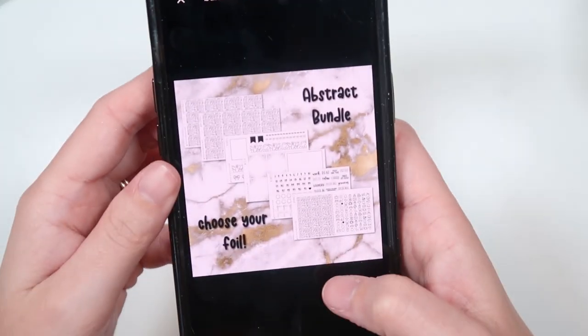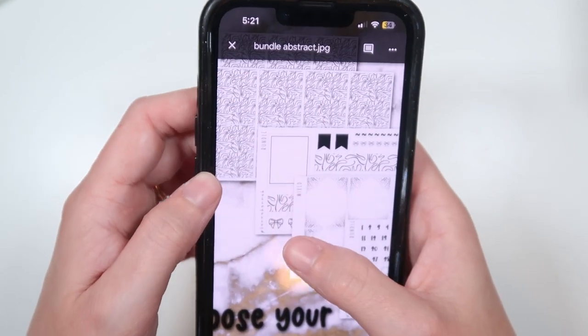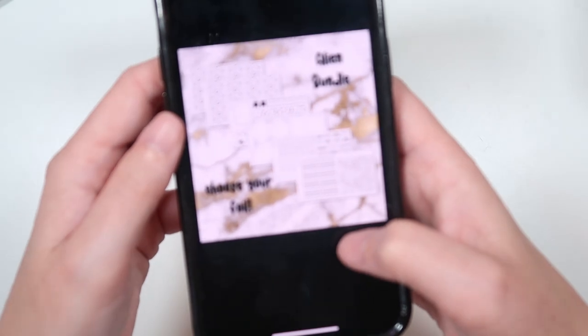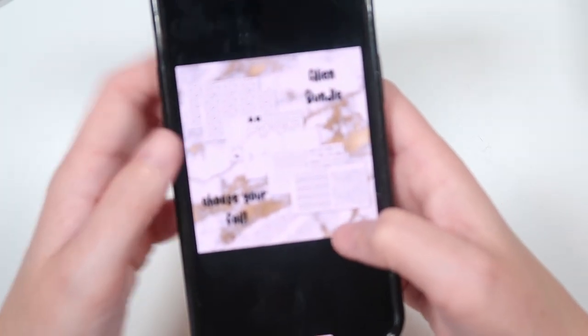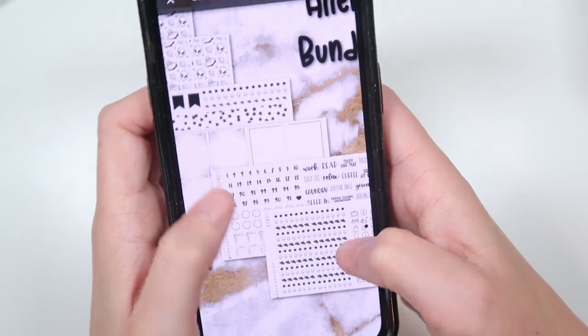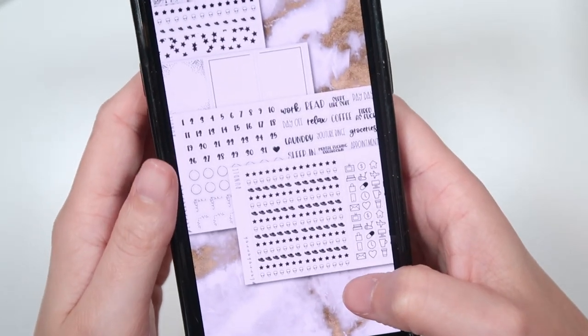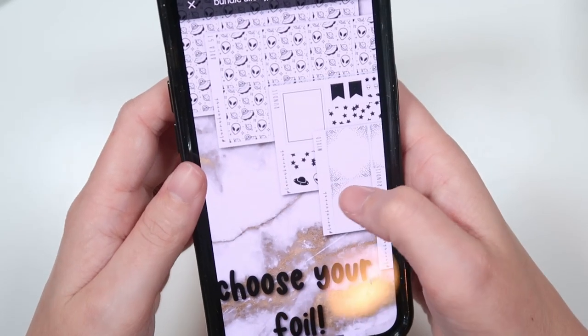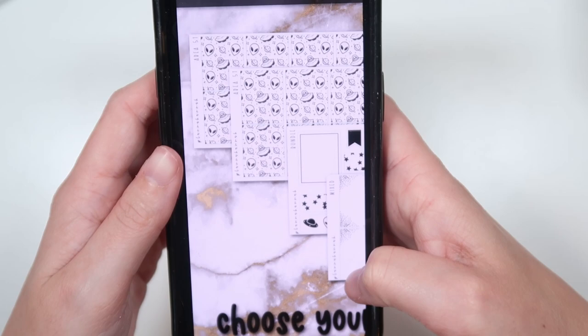And now we will move on to the bundles on me phone. So the first bundle we have coming to the shop is an abstract bundle. Here's what it will look like on the website. We have the abstract headers, washi plus a bow, and then the abstract underlays. Next we have an alien bundle which, oh this one came out so good. This is what it will look like. We've got these alien headers which are exclusive to the bundle. There's like a row of stars, alien heads, and spaceships. And then there's washi of the spaceships and the alien heads. And we have the Area 51 underlays. Came out so cute.